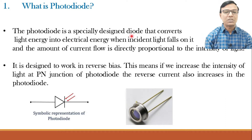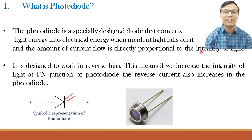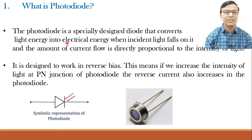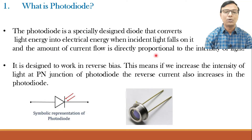The photodiode is a specially designed diode that converts light energy into electrical energy when incident light falls on it, and the amount of current flow is directly proportional to the intensity of light. It is not a normal diode — it is a specially designed diode. As the name suggests, photo means light energy converted into electrical energy when the incident light falls on it.